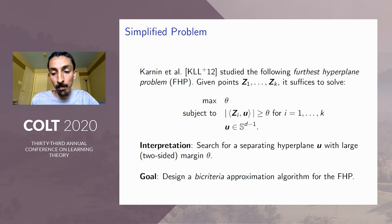So by a bi-criteria approximation algorithm, I mean an algorithm which produces an approximate solution in two senses. One, it does not achieve the optimal θ. Rather, it only produces a solution which achieves a θ, something smaller than θ by a constant multiplicative factor.